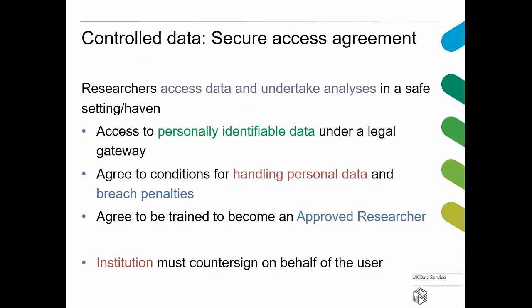For controlled data, there are additional requirements: users are analysing data in a safe setting, they must access personally identifiable data, agree to conditions for handling personal data, agree to an extra set of breach penalties, and agree to be trained as an approved researcher. In this case the institution must countersign rather than just the user — it's a more complex agreement and takes longer, because there is a legal gateway to go through.